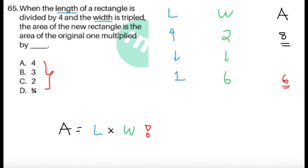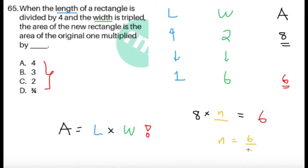The area of the new rectangle is the area of the original one multiplied by blank. So 8 times blank should give us 6. All we have to do is solve for the blank — let's call it n. So n equals 6 over 8, and simplifying we get 3 fourths. So the answer is choice D.